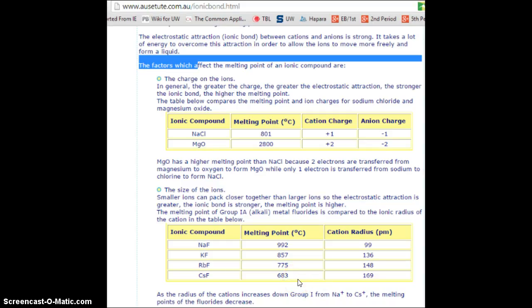So in review, what affects the melting point of ionic compounds? Well, it's their IMFAs, which are affected by opposite charges. So the bigger the charge, the higher the melting point, and the smaller the ion, the higher the melting point. So there you have it. Thanks for listening.